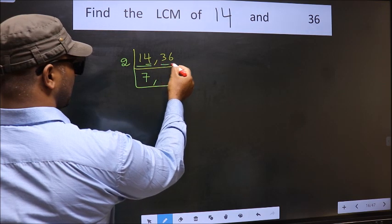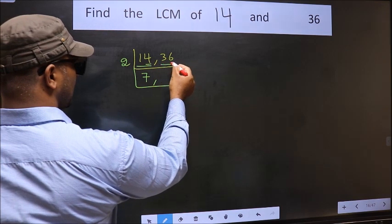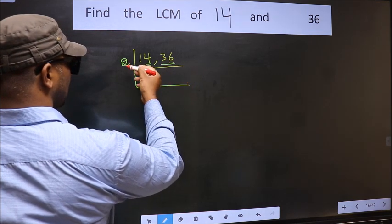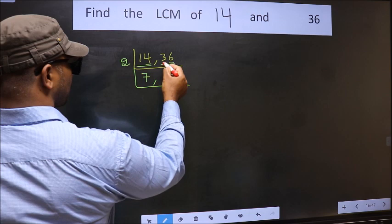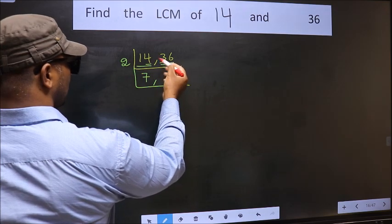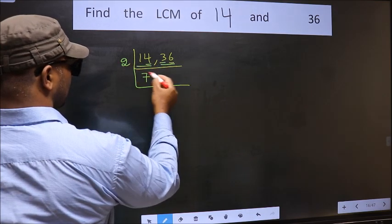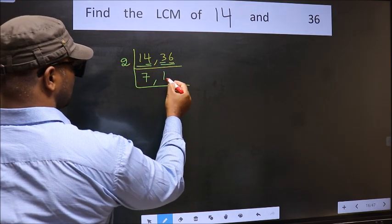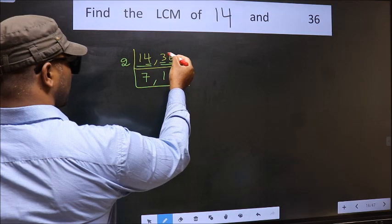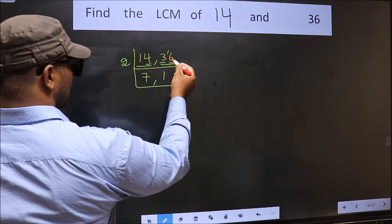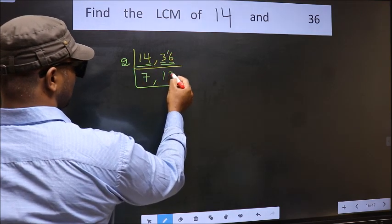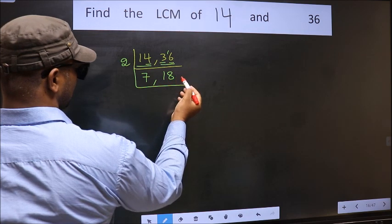Now the other number 36 — last digit 6, so this is divisible by 2. First digit is 3; the closest number to 3 in the 2 table is 2. So 3 minus 2 is 1, carry forward 16. When do we get 16 in the 2 table? 2, 8, 16.